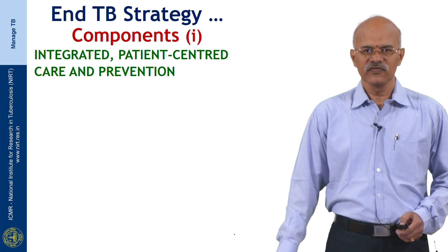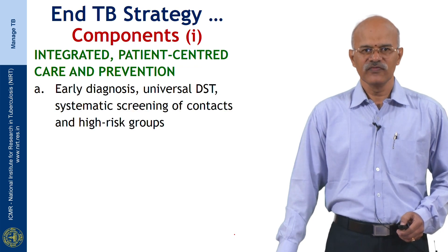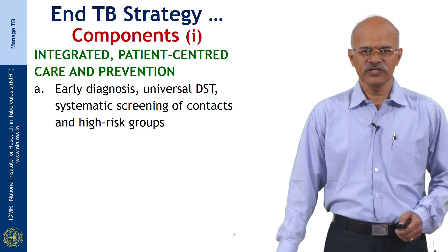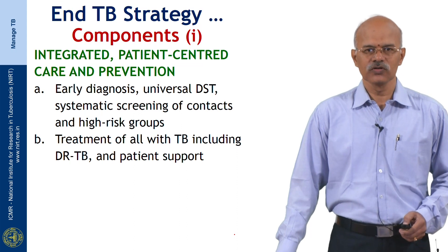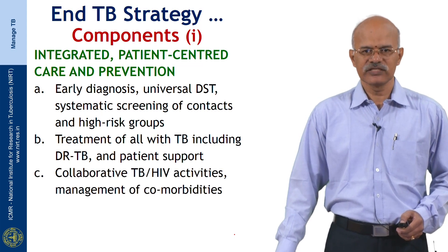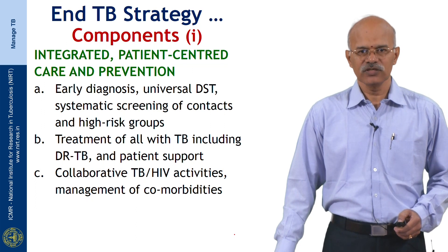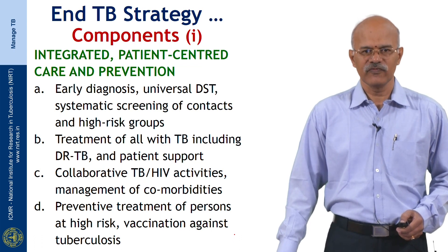There are 10 components for the End TB Strategy against the 3 pillars. For integrated, patient-centered care and prevention, we need: early diagnosis and treatment; universal drug susceptibility testing; systematic screening of contacts and high-risk groups; treatment of all with tuberculosis including drug-resistant TB and patient support; collaborative HIV-TB activities; management of comorbidities; and initiation of preventive treatment for persons at high risk and vaccination against tuberculosis.